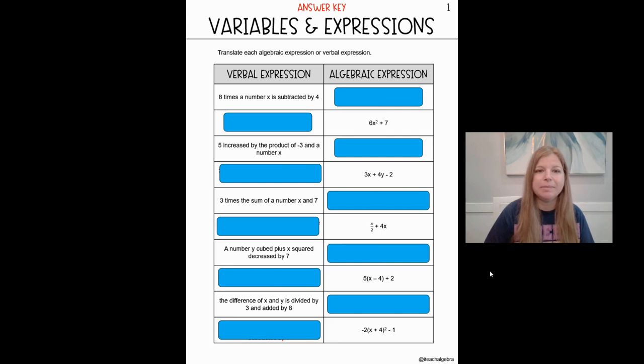The first one, 8 times the number x is subtracted by 4. So I know if it says 8 times the number x, that would be 8x. I don't need to do 8 multiplication dot, the x, nothing. We just know side by side means multiply. So that would look like 8x and then subtracted by 4.